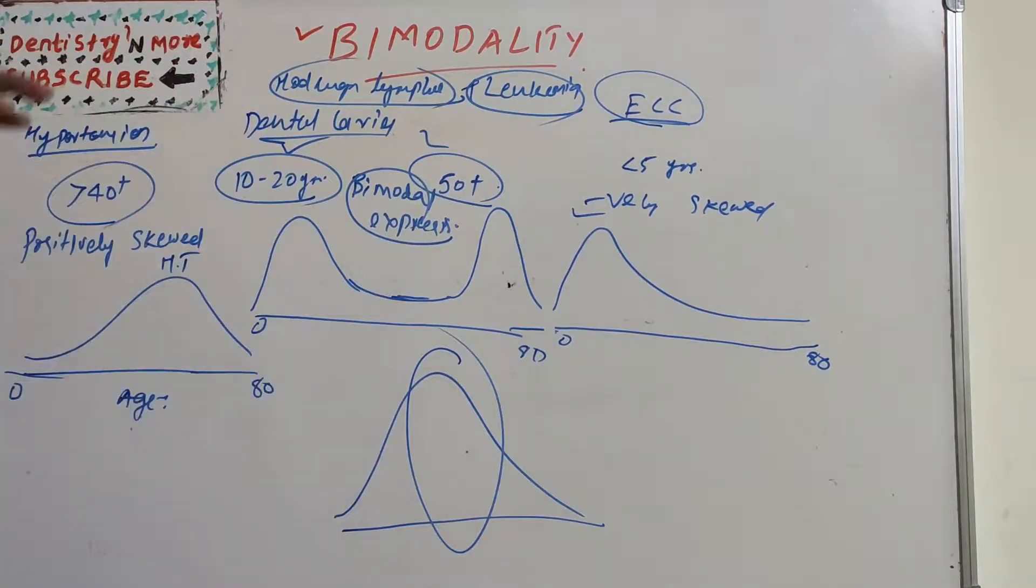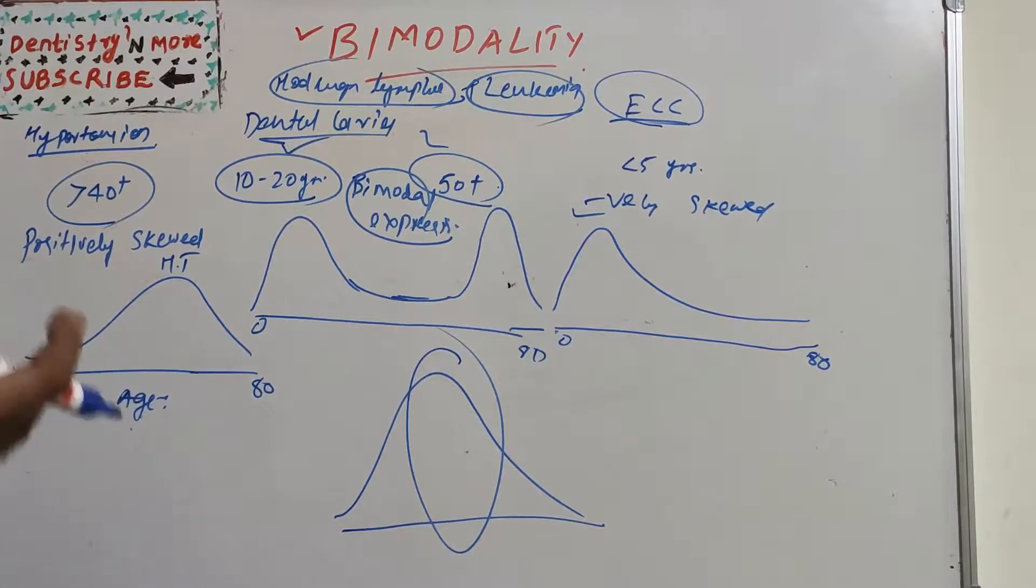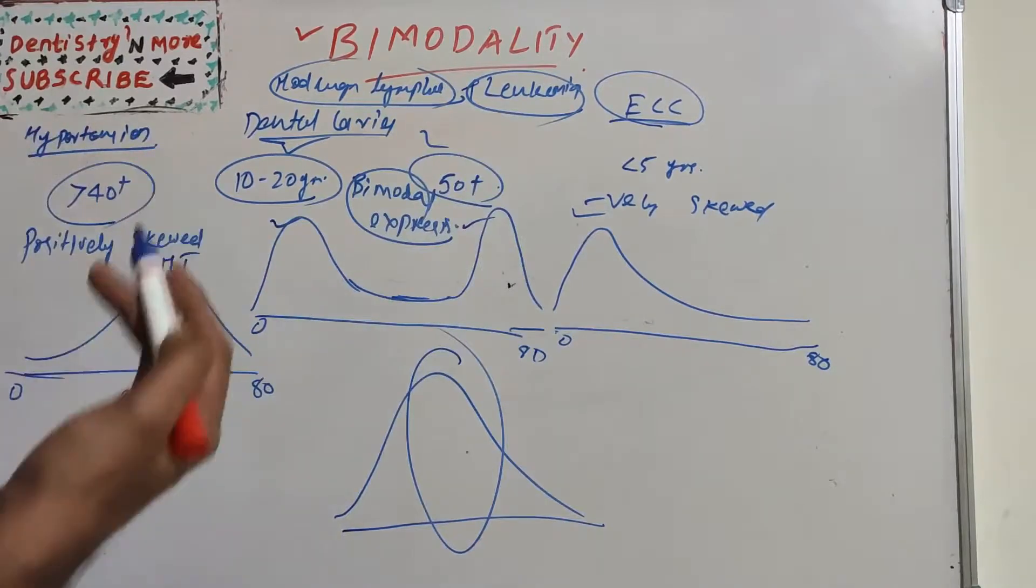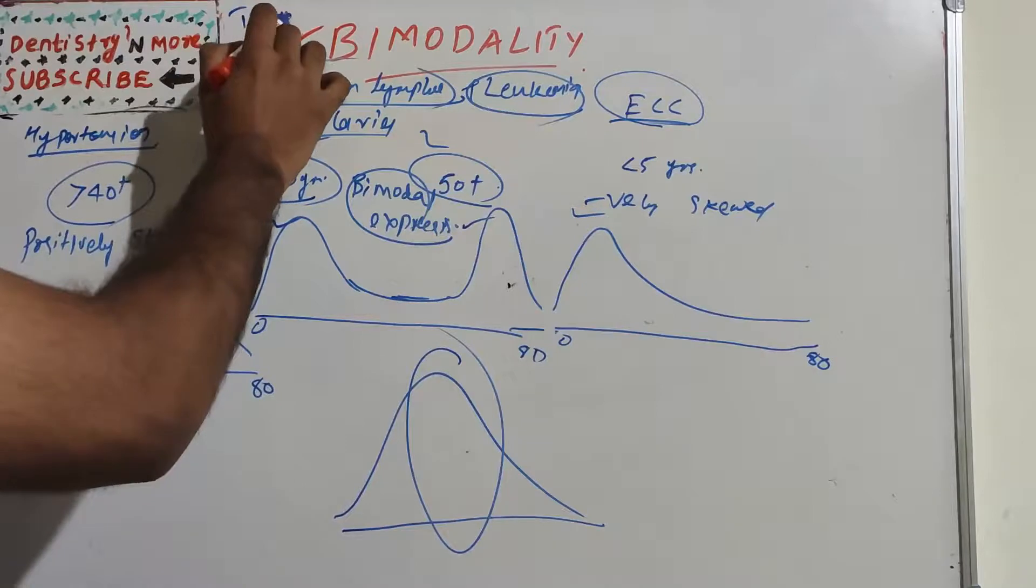So bimodality is when a variable or a disease or anything like dental caries, Hodgkin's lymphoma, leukemia, when it is expressed in two peaks, this is known as bimodality.